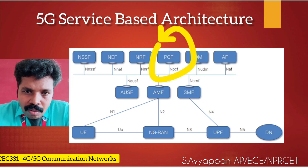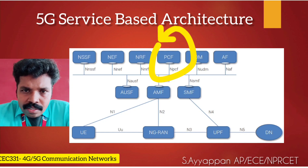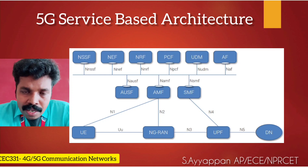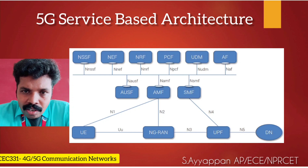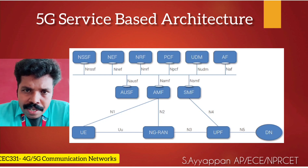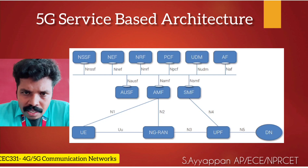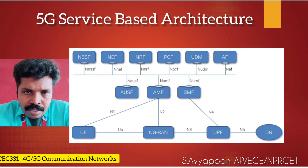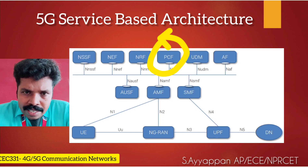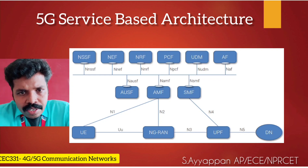Next we are going to talk about PCF, or Policy Control Function. As data is increasing day by day in telecom, we need proper quality of service policies so that data can be managed in the user plane. PCF does exactly that. It is similar to PCRF (Policy and Charging Rules Function) in the 4G network. It gets all the policies from the UDR (Unified Data Repository) and provides those policies to the SMF, so that SMF can create proper PDR (Packet Detection Rules) and pass those rules to the UPF. UPF then enforces those rules on the user plane traffic. PCF can also connect to third-party applications to get commands and customize policies so that particular traffic can be managed based on application requirements.